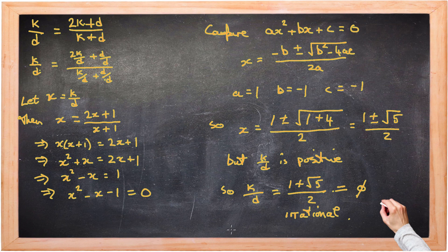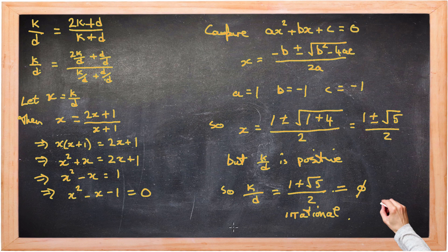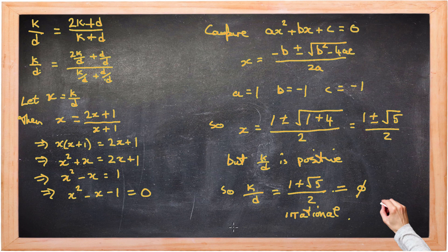The kites to darts ratio would have to be rational. And that would extend to the whole infinite tiling. We've just shown in what we've done here that any infinite Penrose tiling, the kites to darts ratio has to be irrational. So therefore we have shown that there's no periodic infinite Penrose tiling using these two Penrose tiles. That's why they're called an aperiodic set of tiles.